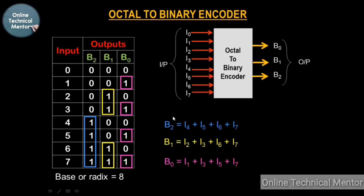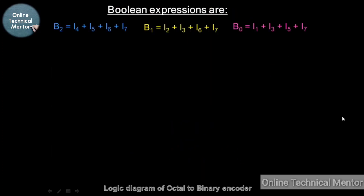So these are my three Boolean expressions derived from the truth table. Using these three Boolean expressions, we are now going to draw the logic diagram. To do that, you have to consider all the input variables present on the right-hand side of the assignment operator for each of the three expressions.